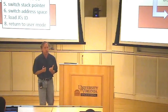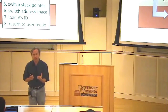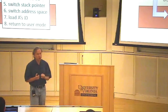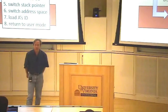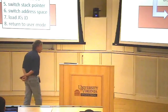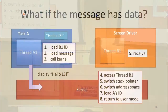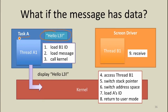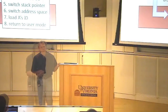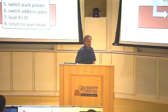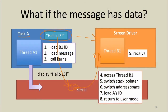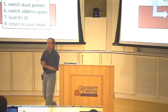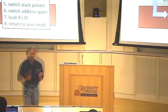Everything so far assumed a very small message that could be sent in a register between two processes. What if there's larger data — like a string to print on the display that could be arbitrarily long? Instead of sending a small value in a register, we've got a data structure, say a string in task A's memory, that we need to get into task B's memory. The obvious approach is to copy it, but that means copying into the kernel first and then into B's memory — two copies, which is expensive.